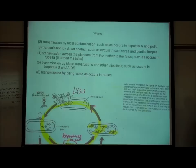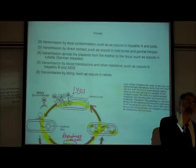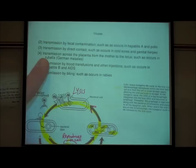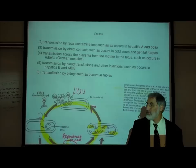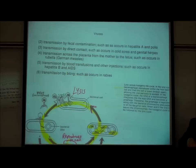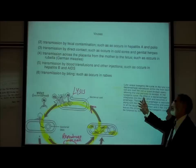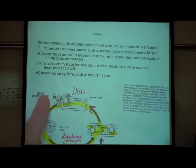A third way is direct contact, such as with a cold sore or genital herpes — herpetic sores caused by a virus. If you kiss someone with that sore or have sex with someone with genital herpes, you can contract that virus. A fourth route is transmission across the placenta from mother to unborn baby — any virus in the mother's bloodstream can cross the placenta, which is important with German measles, as it can cause birth defects. Hepatitis B and HIV are transmitted through blood.